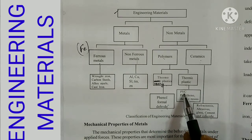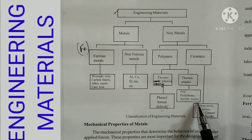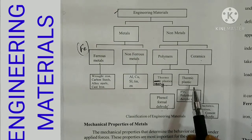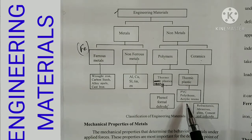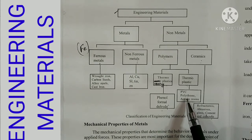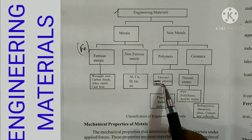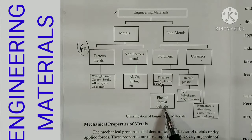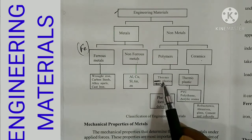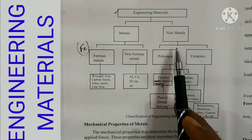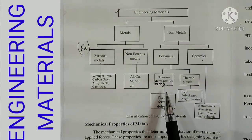Examples of thermoplastics include PVC (polyvinyl chloride), polythene, and acrylic resin. So these are the classifications of engineering materials.